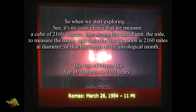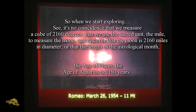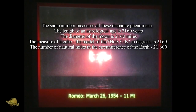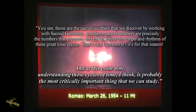It's no coincidence that we measure a cube at 2,160 degrees, that we use the sacred unit — the mile — to measure the moon and discover that the moon is 2,160 miles in diameter, or that the length of the astrological age — the Age of Pisces, the Age of Aquarius — is 2,160 years. The same number measures all of these disparate phenomena. The number of nautical miles in the circumference of the Earth is 21,600. Those are the sacred numbers we discover through sacred geometry, and they precisely measure the tempo and rhythms of these great time cycles.